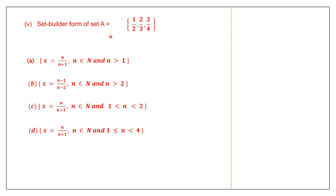Now, the set builder form of set A. Which of these is the set builder form of set A? Here it says X equals n by n plus 1, X belongs to natural numbers — all numbers starting with 1 — and n is greater than 1. That means n the numerator should start from 2 onwards. But option A has 1 as a numerator, and the condition says n is greater than 1, so we cannot consider option A.